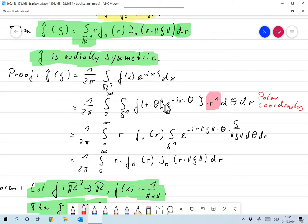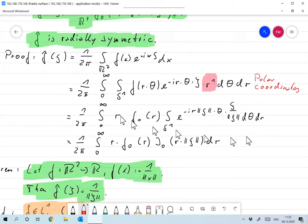Plugging that in, then I get E to the minus IR theta times psi. And of course, there's an integration constant, and that is R. When we go from rectangular coordinates to polar coordinates, we get that integration constant of R, and that's important, right? I mean, I always forget about this.